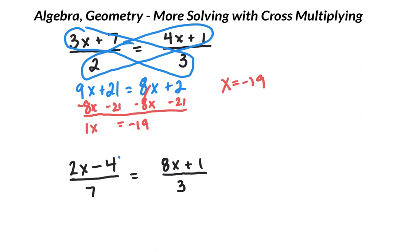Let's do this again. I just want to remind you this works when we have a fraction equal to a fraction. So 2x minus 4 times 3 would be 6x minus 12, and then we do 7 times 8x plus 1, so 56x plus 7.